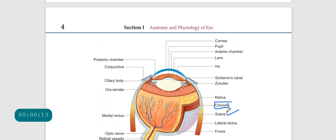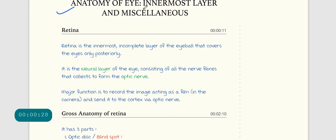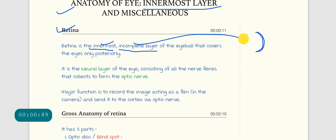We have done with sclera and choroid, and now we are going to start the last one, that is the retina. Briefly discussing the anatomy of the retina: the retina is the innermost layer. It is an incomplete layer because it partially covers the eye from the back. It covers the eyeball at the posterior aspect, and it is the innermost incomplete layer.